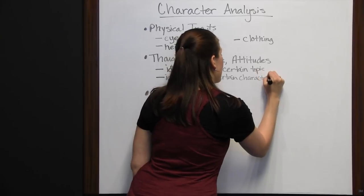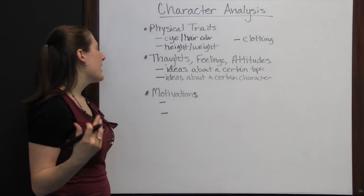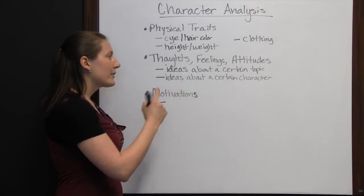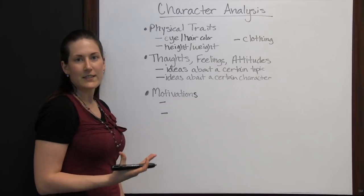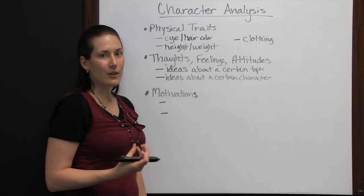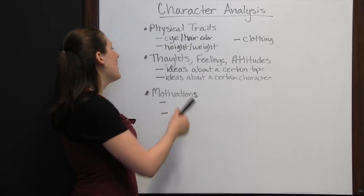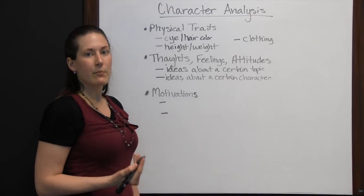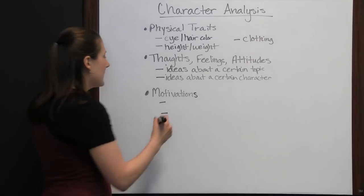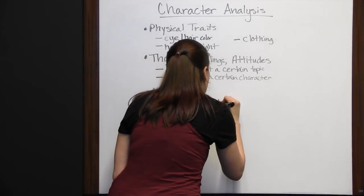Whenever you're reading, if you know that a character really doesn't like another character, you may start to feel the same way, or you might have to ask yourself why that character feels that way. If a character really hates school — say it's a story written from a child's point of view and you're hearing that the child's ideas about school are that it's really bad and they don't like going — then you may have to investigate why they feel that way. The character's thoughts, feelings, and attitudes are going to be important to you understanding that character as a whole. The last thing to look at are the character's motivations — their reasons for behaving a certain way.